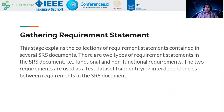From gathering requirement statements, this stage explains how the collection of requirement statements is contained in several SRS documents. There are two types of requirement statements in the SRS document: functional and non-functional requirements. Both are used as the dataset for identifying interdependency between requirements in the SRS document.